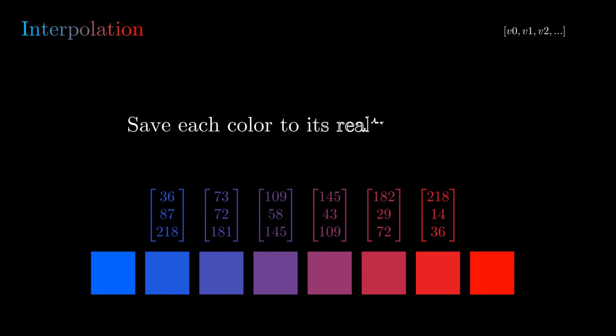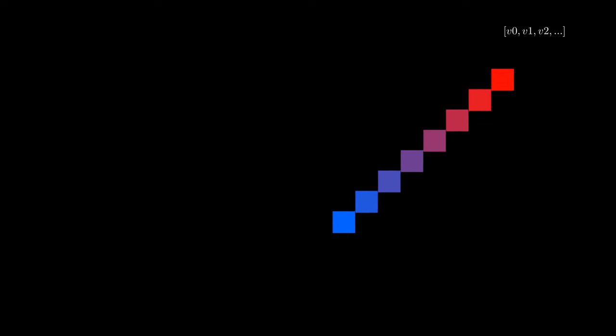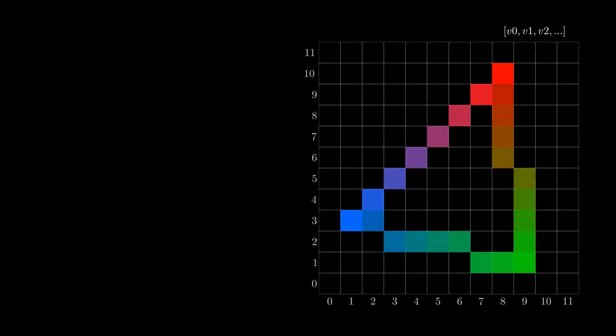For each new color, we can save it relative to its position in our vertices. Now we need to fill in the rest of the pixels with the scanline algorithm.